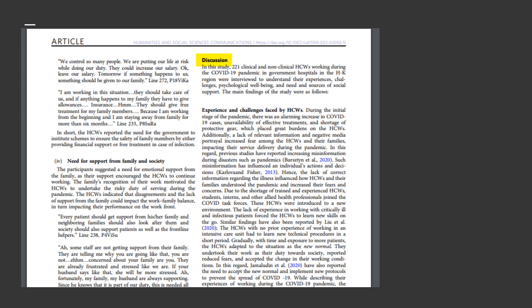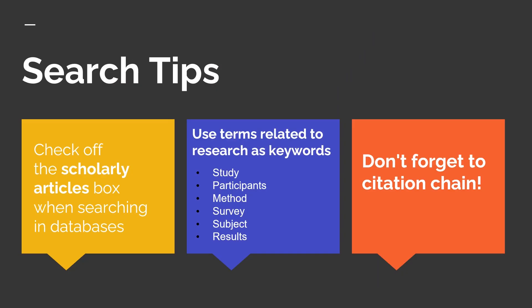If at any point you are unsure about the article you've found and whether or not it's empirical research, you can always reach out to the librarians at the CSM library who can take a look, confirm what type of article it is, and answer any other questions that you have. It is common for students to have a hard time finding empirical articles, so we have a few suggestions that might help. First, while not all scholarly articles are empirical, all empirical articles should be scholarly. So if you're searching in a CSM database, always be sure to check the box in the filters section that will ensure you only see peer-reviewed scholarly articles — that box can be found on the left-hand side of the results page. This will filter out any sources that are not peer-reviewed articles.